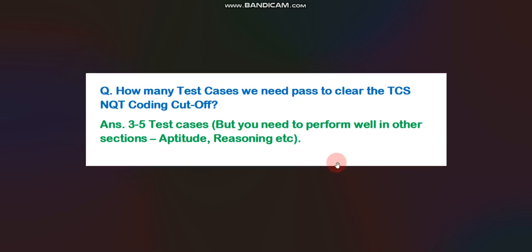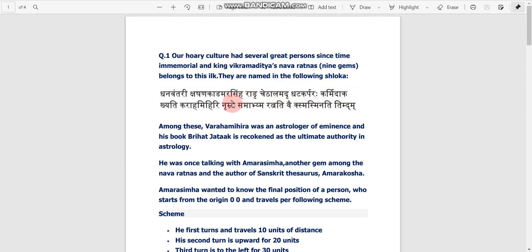Now the question is: how many test cases do you need to pass to clear the TCS NQT coding cutoff? Generally you need to pass three to five test cases. Please note you also need to perform well in other sections like aptitude, reasoning, and verbal ability. But if you pass three, four, or five test cases, that's enough to clear the TCS coding cutoff.